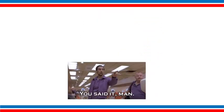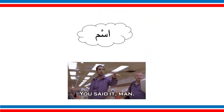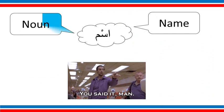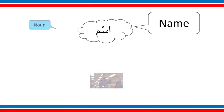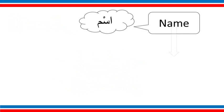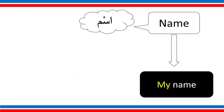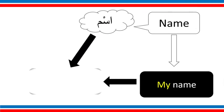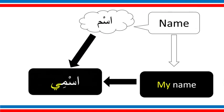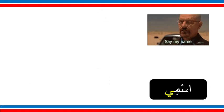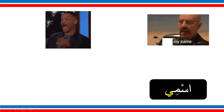As we said, ism means both name and noun. We already talked about noun — now let's talk about name. We learned that if I want to say 'my name', we add 'ye', so it becomes 'ismi'. Ismi means my name. Now, how can I say 'your name'?